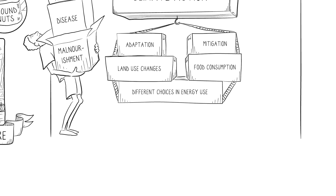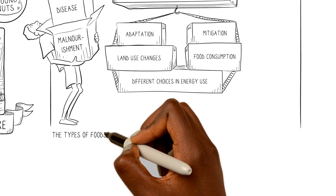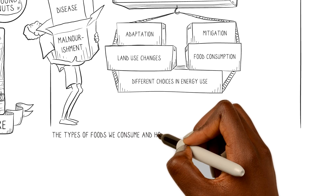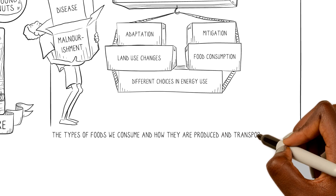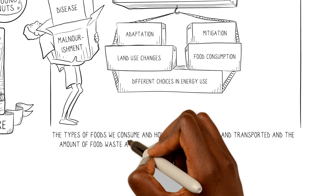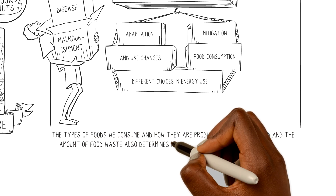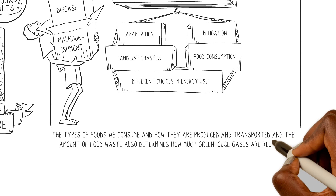Because the type of foods we consume, and how they are produced and transported, and the amount of food waste, also determines how much greenhouse gases are released.